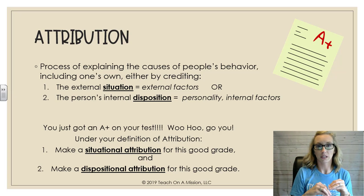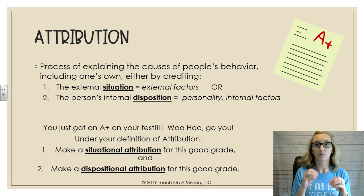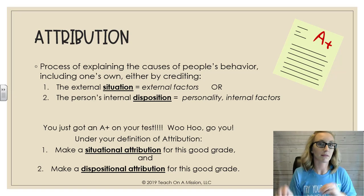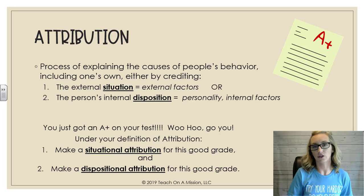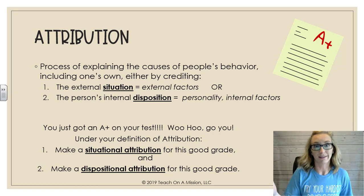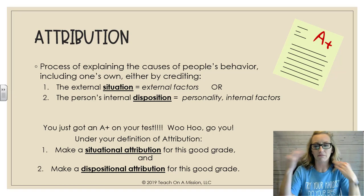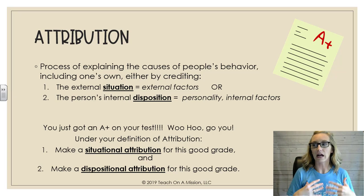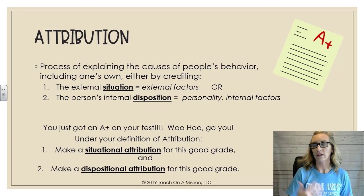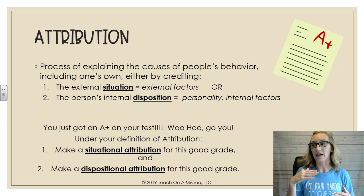For your A-plus on the test, a situational attribution would be something like: I was using my lucky pen, I got a lot of sleep and had a good breakfast, my teacher is a rock star, or my partner helped me. A dispositional attribution would be something about you personally — because I'm brilliant, because I'm a good student. It gets tricky with 'I studied,' which could be situational or dispositional — there's a fine line there.